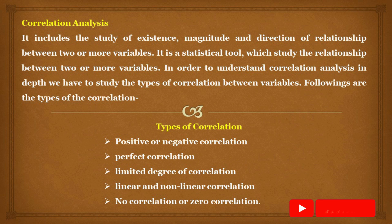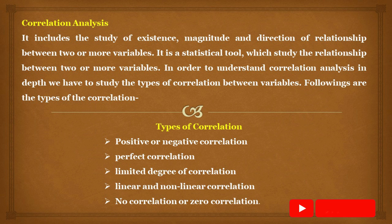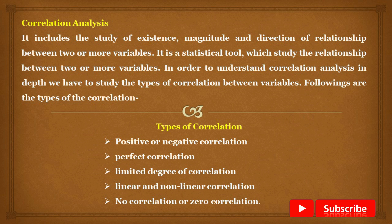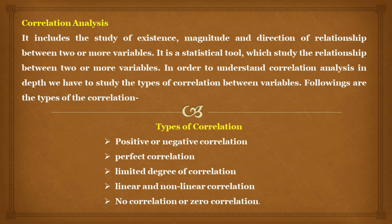Today we are going to discuss the meaning of correlation analysis and its types. When we look at the definition, correlation analysis includes the study of existence, magnitude, and direction of relationship between two or more variables. It is a statistical tool which studies the relationship between two or more variables.